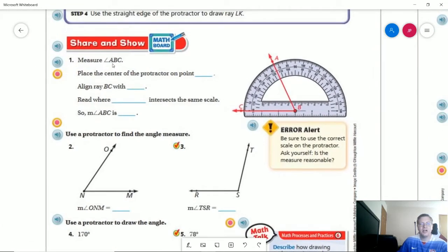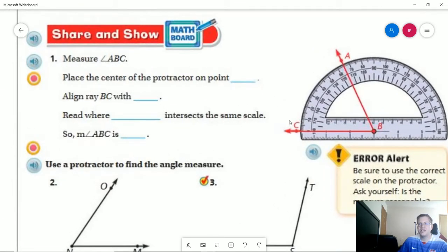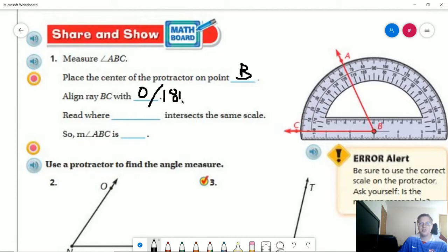So number one, on Sharon's show, we have everything given for us. Now, one of the things that will be difficult is to actually make sense of this because it might not be as clear as it will on your page because of the way that I had to get this. So to start with, we're going to place the center of the protractor on point B. We are going to align point B and C with the zero slash 180 degree mark.